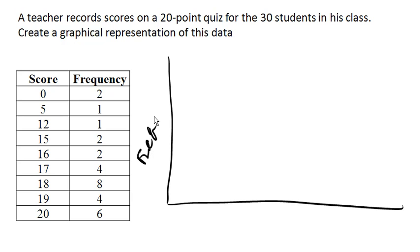I'm just going to write it up here. Frequency along the vertical. We can see here we're going to need to go up to 8. So, 1, 2, 3, 4, 5, 6, 7, 8, 9, 10, we'll do that.